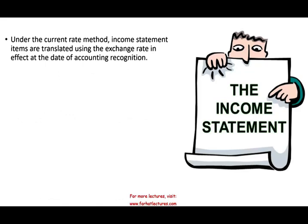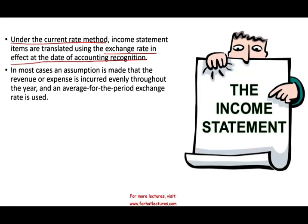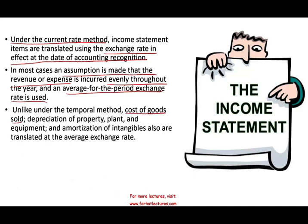For the income statement, under the temporal method, income statement accounts are translated on the date of the exchange. For example, if McDonald's sells burgers throughout the day, the rate changes throughout the day — in theory you'd translate each transaction at a different rate, but that's not practical. Under the current rate method, income statement items are translated using the exchange rate in effect at the date of accounting recognition. In most cases, an assumption is made that revenues and expenses are incurred evenly throughout the year, so we use the average exchange rate for the period. Unlike the temporal method, cost of goods sold, depreciation on property, plant and equipment, and amortization of intangibles also use the average exchange rate rather than the historical rate — which makes this method easier.